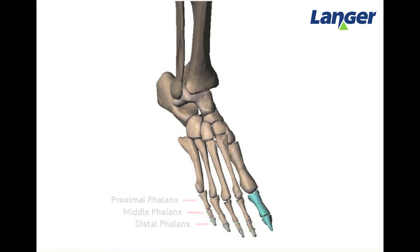The final bone within the phalanges is the greater toe joint. This joint is made up of a proximal and distal phalanx.